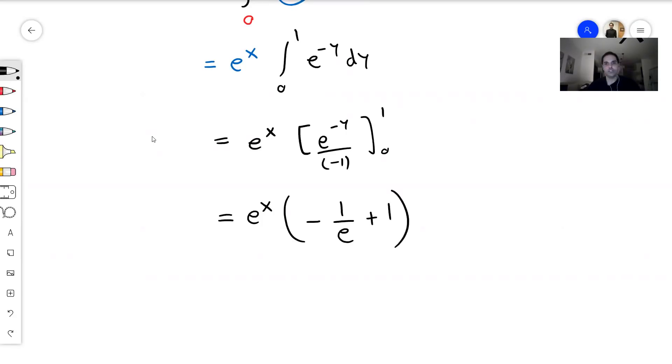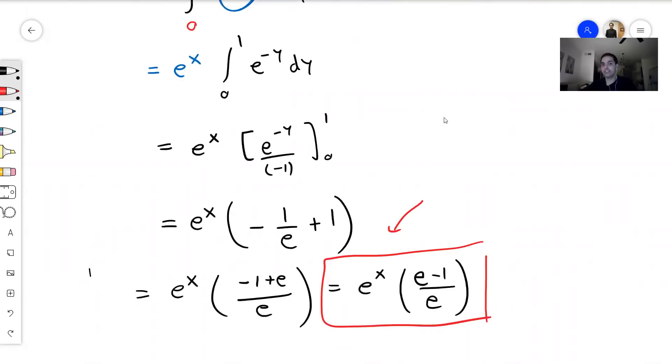And again, you can simplify this if you want. So e^x times minus 1 over e plus 1, simply minus 1 plus e over e. And that becomes e^x times (e-1)/e. Lots of e's. The point is, this thing is actually a function of x.